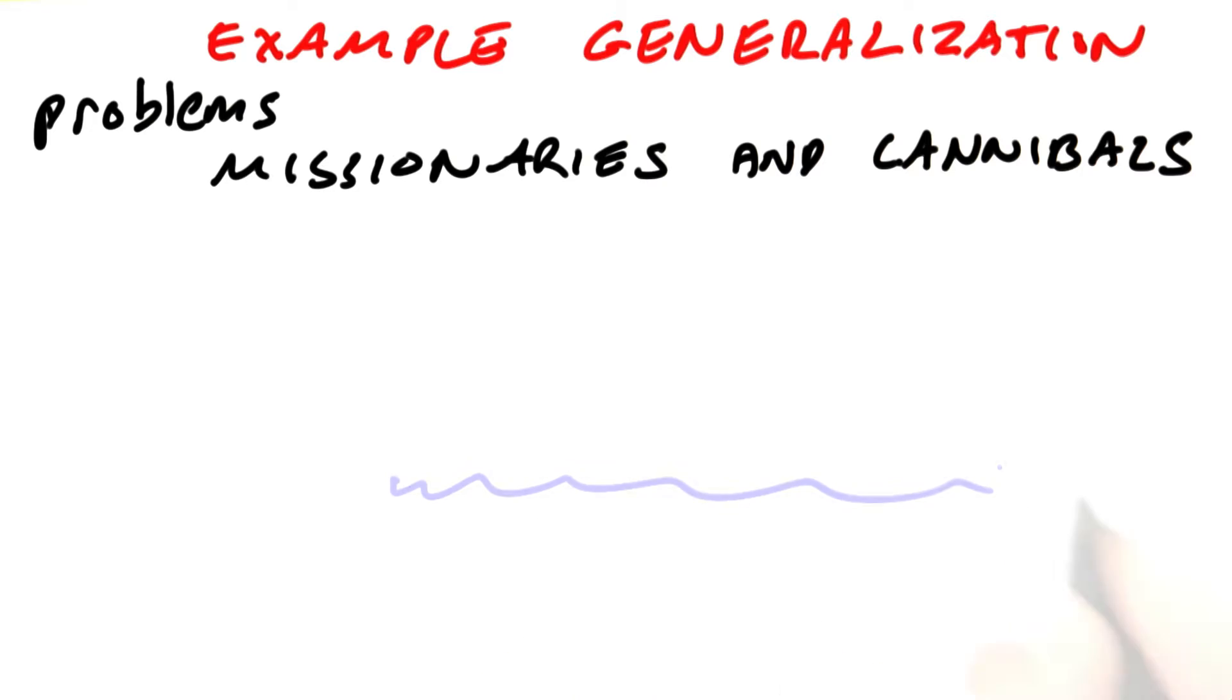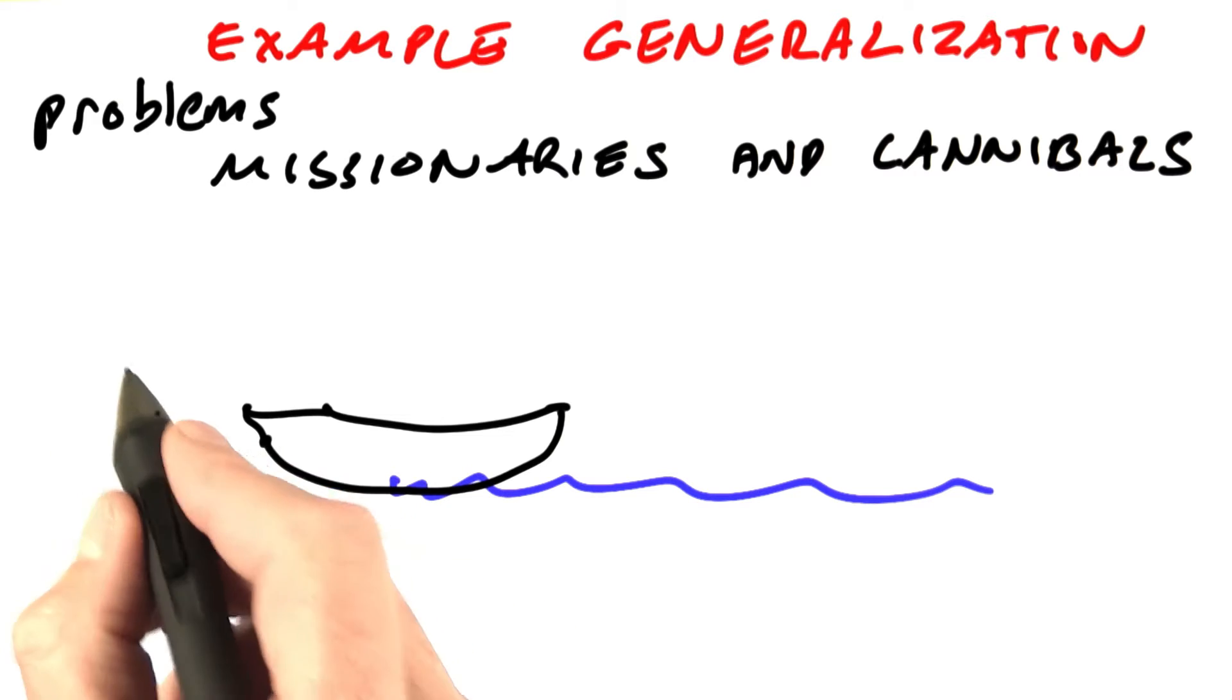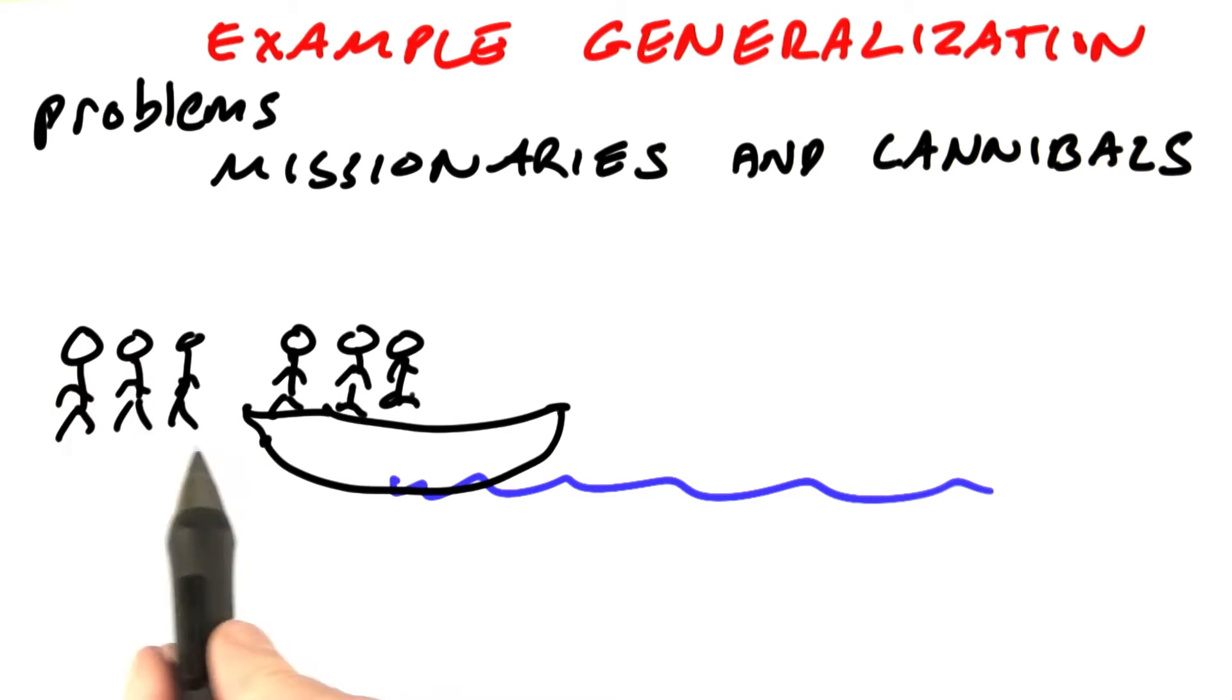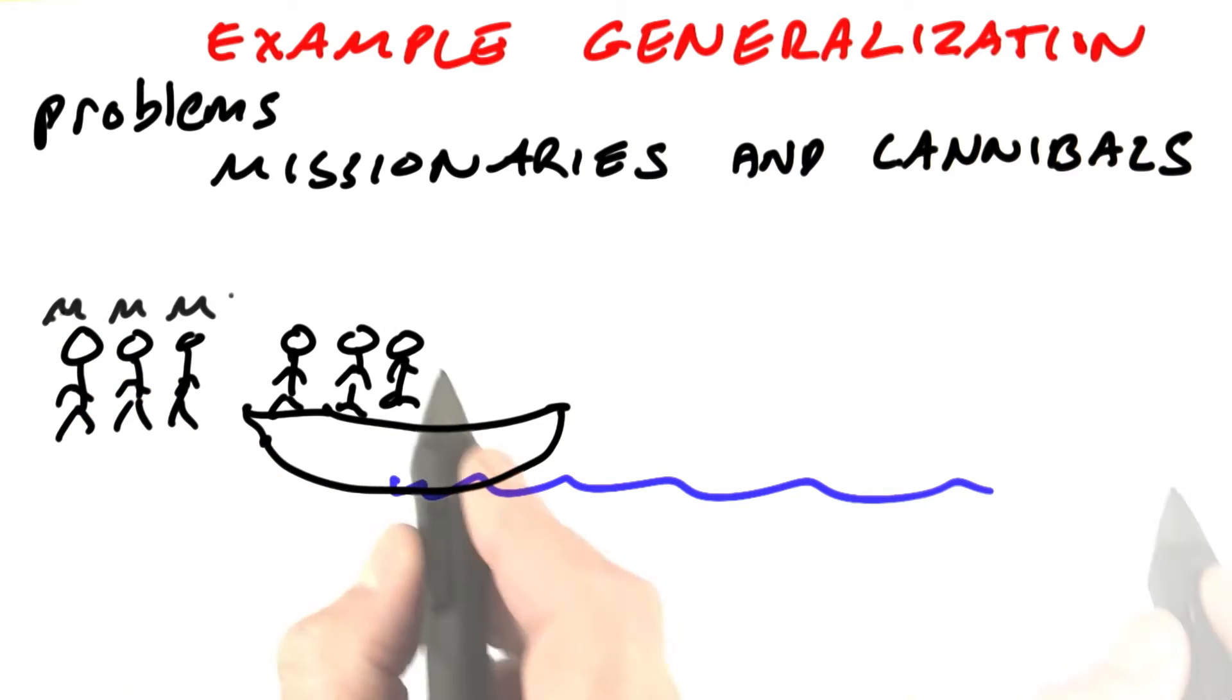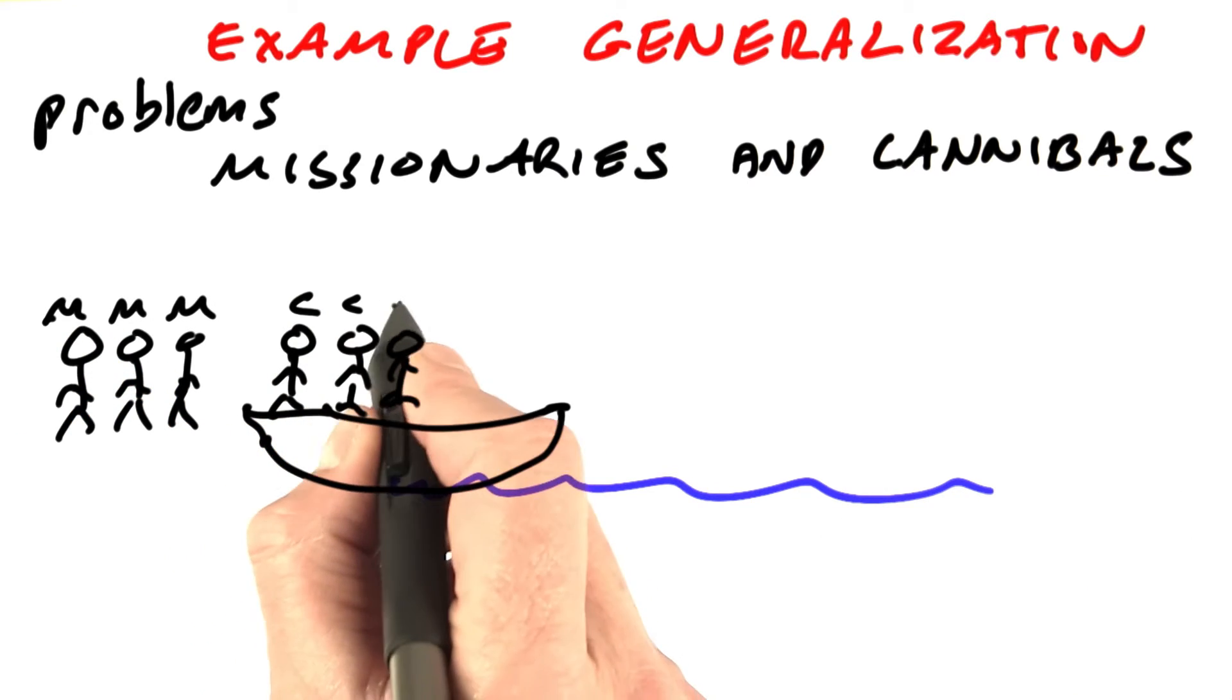It works like this. There's a river we have to cross, similar to the bridge, but this time it's a river. We've got a boat, and on this side of the river there are six people. No flashlight, but a boat and six people, and three of these people are missionaries and three are cannibals.